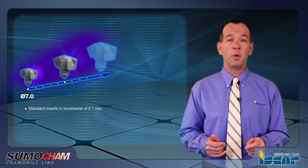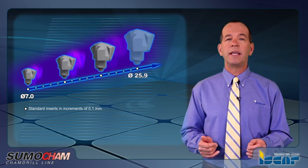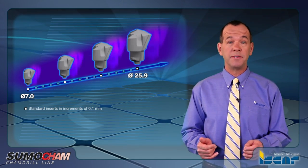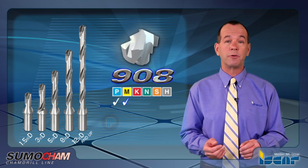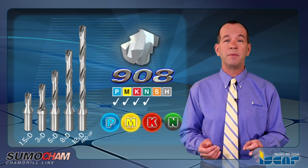Available is a wide diameter range of 7.0 to 25.9 millimeters. Each body can carry ten different diameters of drilling heads in 0.1 millimeter increments. Each head can be mounted on five different bodies with four geometries for ISO PMKN materials.